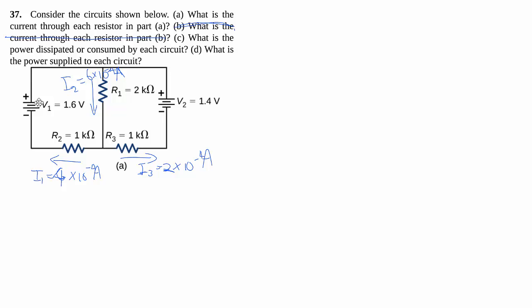Part C has to do with power dissipated. In fact that's very much related to part D, which is the power supplied. Dissipated refers to the resistors, and the supplying refers to my voltage. But let's put all these together in one single table.